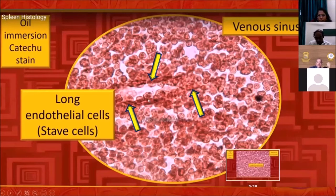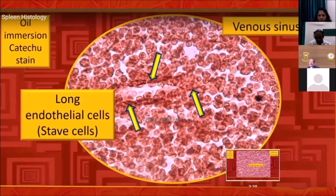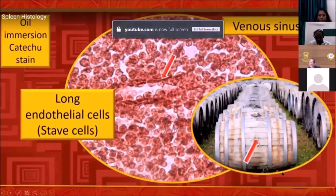We know there is a high level of permeability in this area, and we also know there are flat, longitudinally running endothelial cells unique to this region — we have always called them stave cells. Now you can actually see the stave cells in this photograph. I have given the example of a wine barrel to compare with the stave cells.